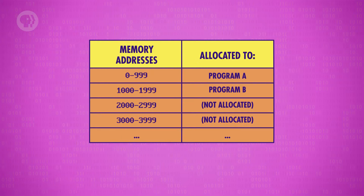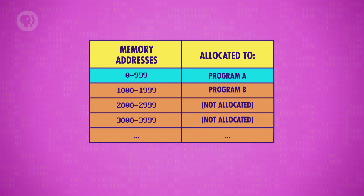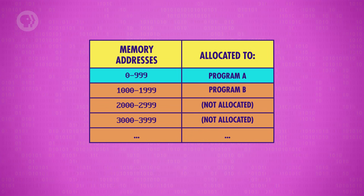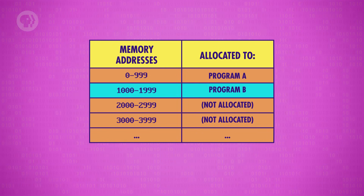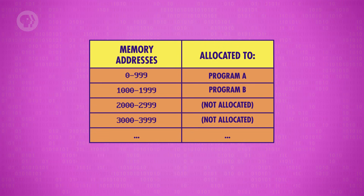There's one big catch to having many programs running simultaneously on a single computer: each one is going to need some memory, and we can't lose that program's data when we switch to another program. The solution is to allocate each program its own block of memory. For example, let's say a computer has 10,000 memory locations in total. Program A might get allocated memory addresses 0 through 999, and Program B might get 1,000 through 1,999. If a program asks for more memory, the operating system decides if it can grant that request, and if so, what memory block to allocate next.